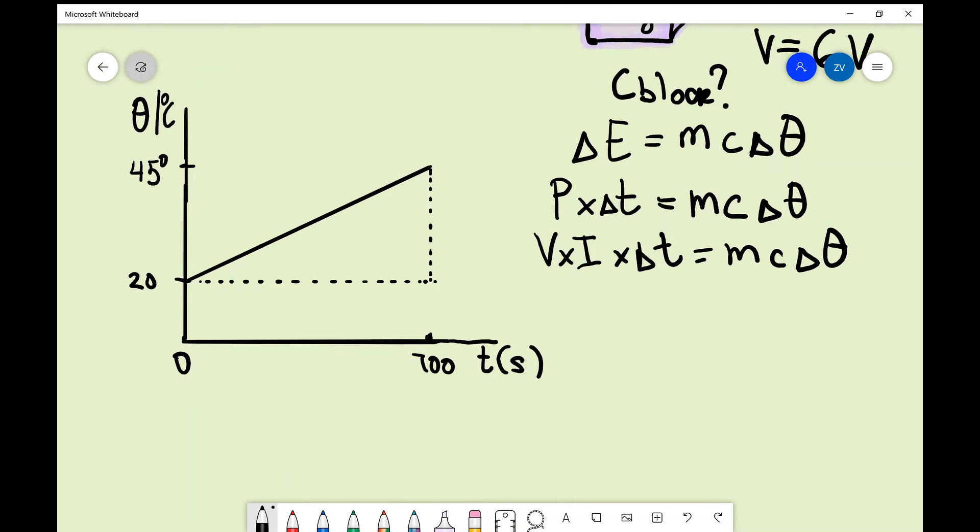Now notice that if I put the delta t onto the other side, what I'm going to get is that V times I is going to equal mc delta theta over delta t.